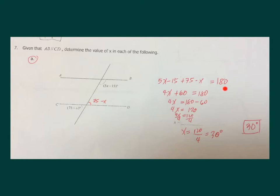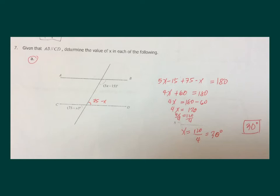Once you know the relationship, the rest is just algebra. Add what you can add and apply addition of expressions properly. 5X minus X gives 4X. Negative 15 and 75 gives 60. Reduce the equation until you get the exact value of X — in the end it will be 30. By subtracting both sides by 60 and then dividing by 4.